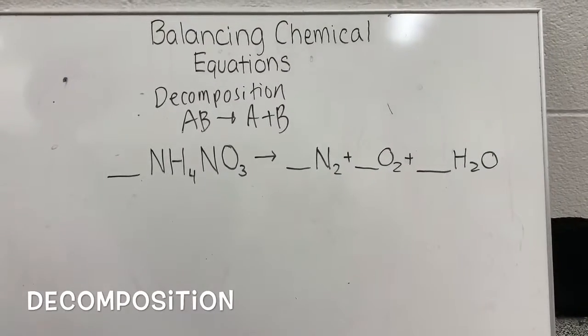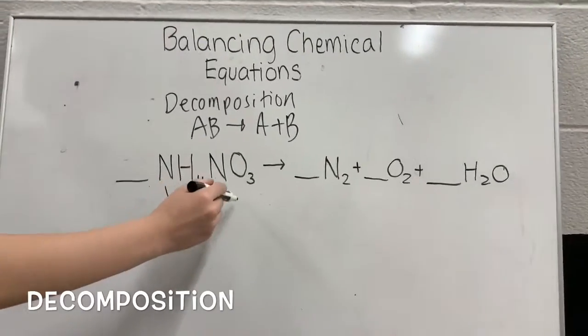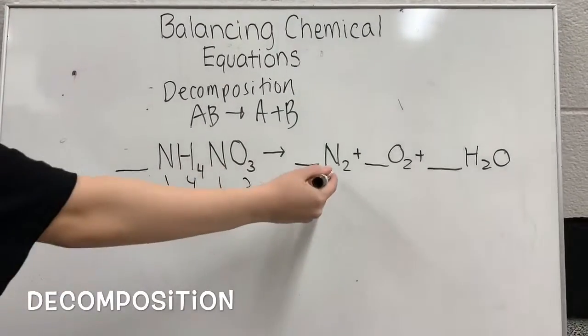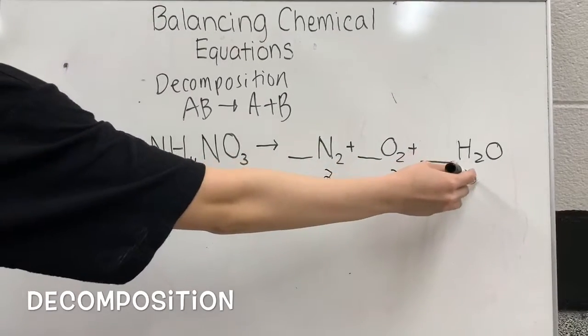So the first thing we're going to do is count the numerical value. So there's one, there's four, there's one, there's three, there's two, there's two, there's two, and then one.